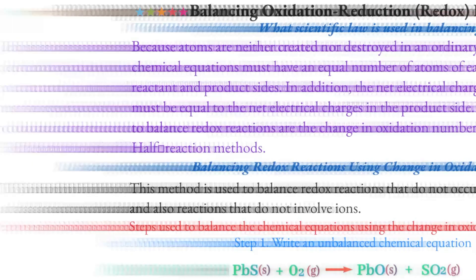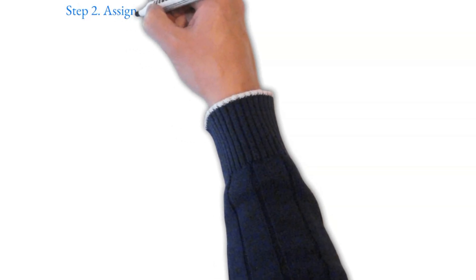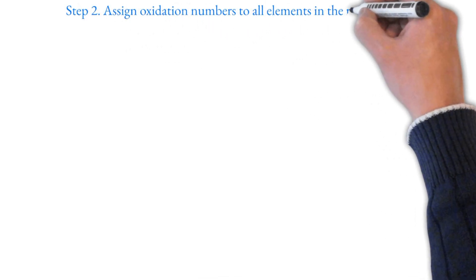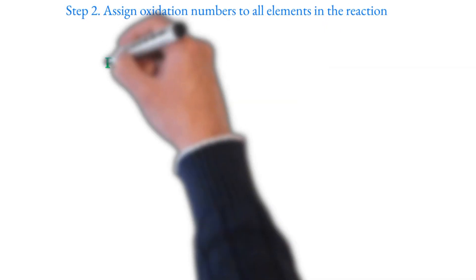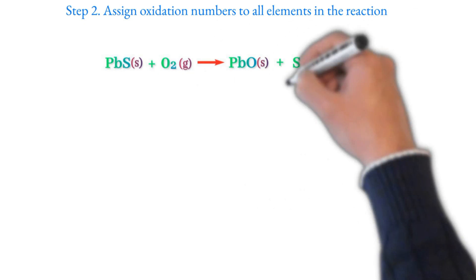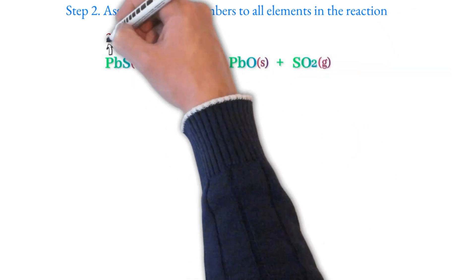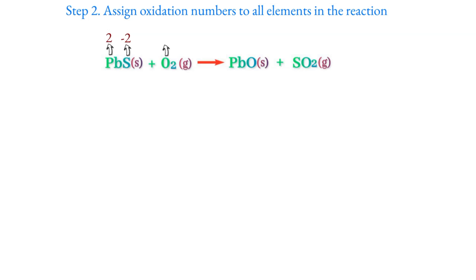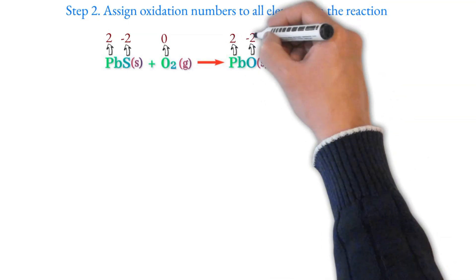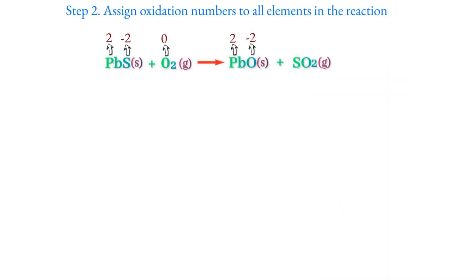Step 1 and Step 2: Assign oxidation numbers to all elements. For example, oxygen is typically minus 2. We find that sulfur is plus 4 and oxygen is minus 2.